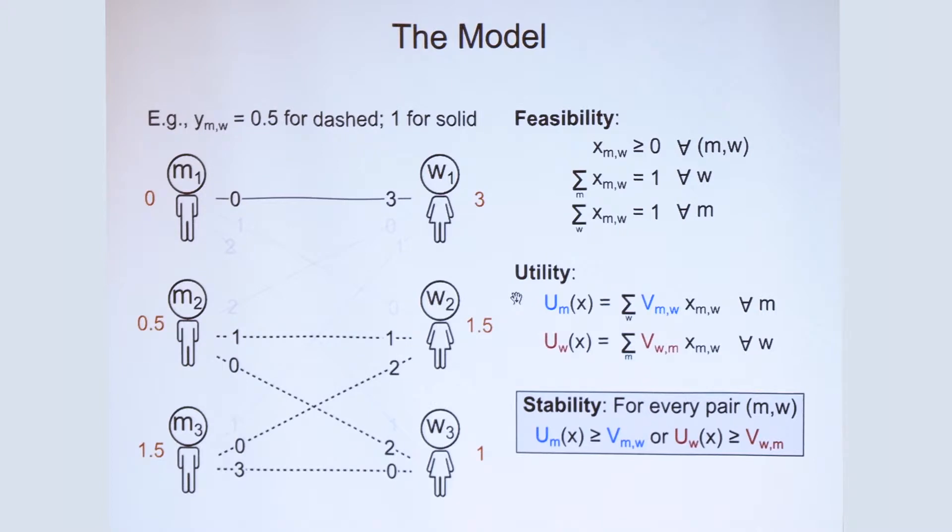Here's another example. Now there's a matching Y which puts a mass of 1 on this top edge and a mass of three times a half plus one. And you can see that W2 satisfies the utility threshold for the pair M to W2. And in fact, that's true for every pair.